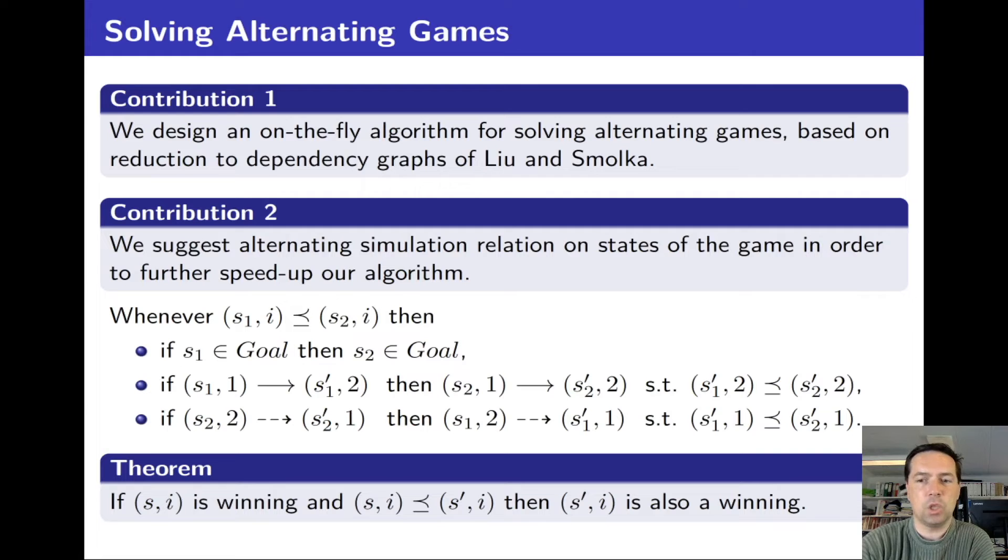The definition is given here and the main key result is that if a state si is winning and si is simulated by the state s'i, then s'i must also be a winning state in the game, which introduces some sort of monotonicity property that we take advantage of.